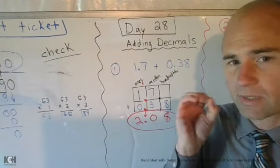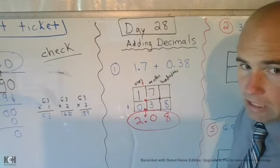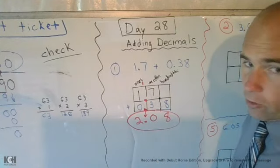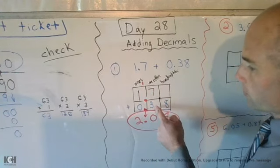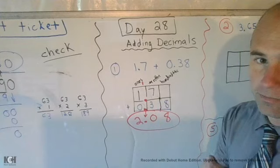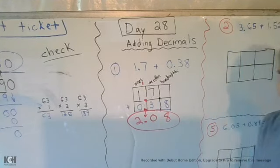So, remember some key things here. Stack them on top of each other. Make sure that the decimal is lined up. And therefore, your 1 is in the 1's column. Your 7 is in your 10th column. Your 3 is in your 10th column. And your 8 is in the 100th column. For this specific type of problem. So, let's go ahead and get some practice going.